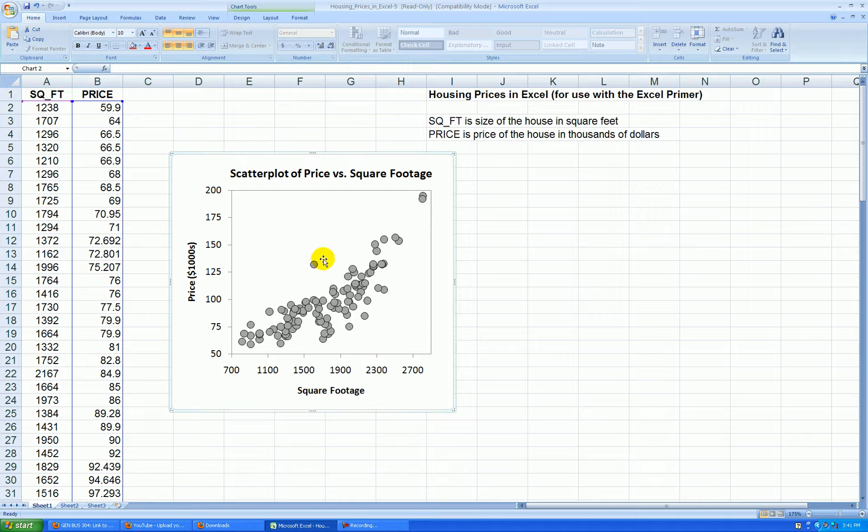Here's a weird point. I would call this an outlier. These two points have a little bit of a gap between them and the rest of the points. So we might call those high leverage points.